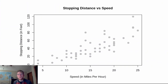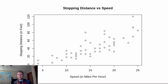Let's start with some context. Let's say that we're looking at the relationship between two numeric variables — one numeric variable is the speed of a car and the other is the stopping distance in feet for that car. One thing we might notice when we look at this data is that there's some kind of relationship between these two variables.